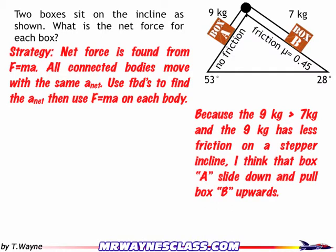I also need to establish a direction for net force, so I'm going to guess on this. I'm going to guess that because the 9 kg mass is greater than 7 kg, and the side the 9 kg is on has no friction and is a steeper side than the 7 kg box, or box B, that the 9 kg box is going to go down, and that's going to pull the 7 kg box upwards. So that's going to be my chosen direction.